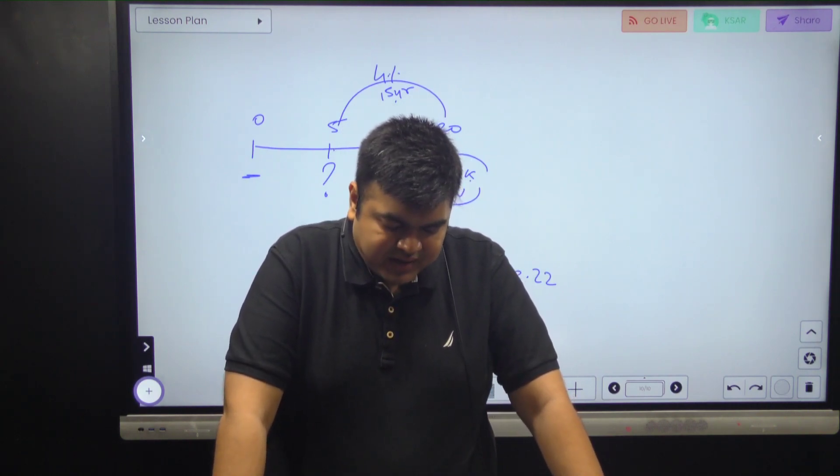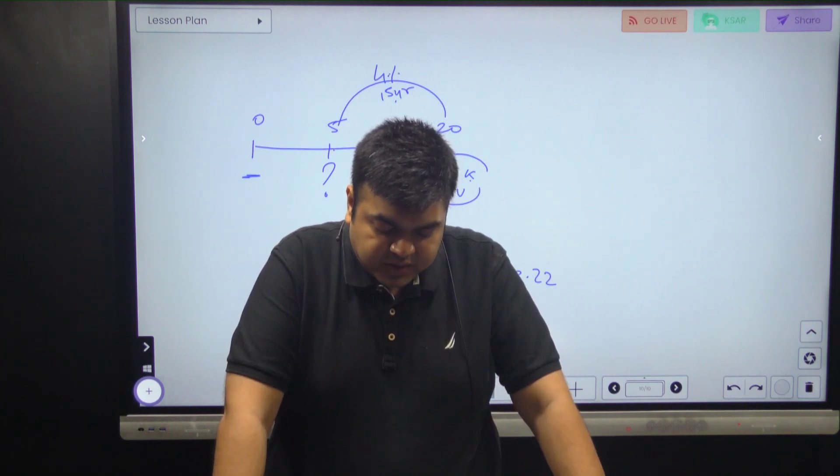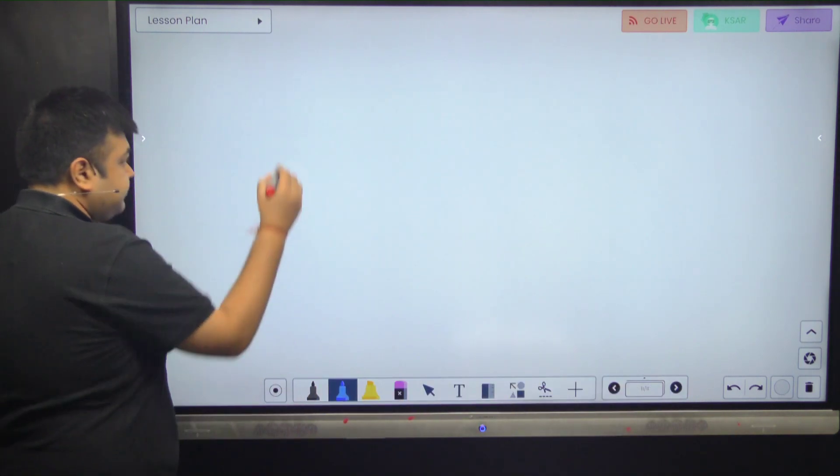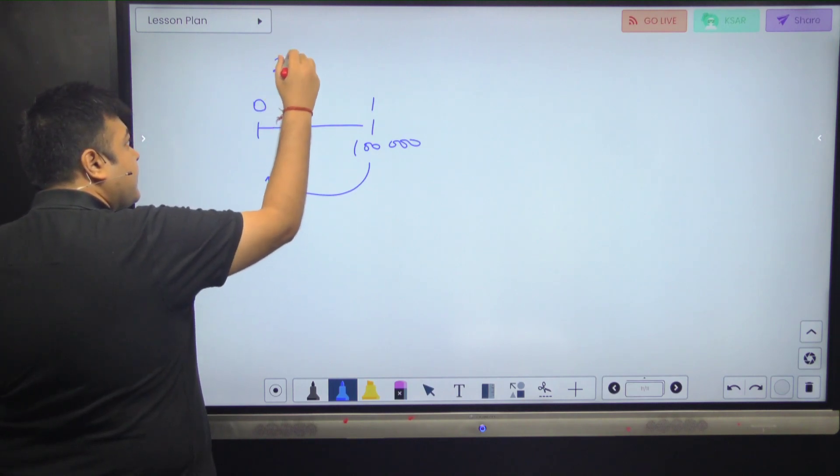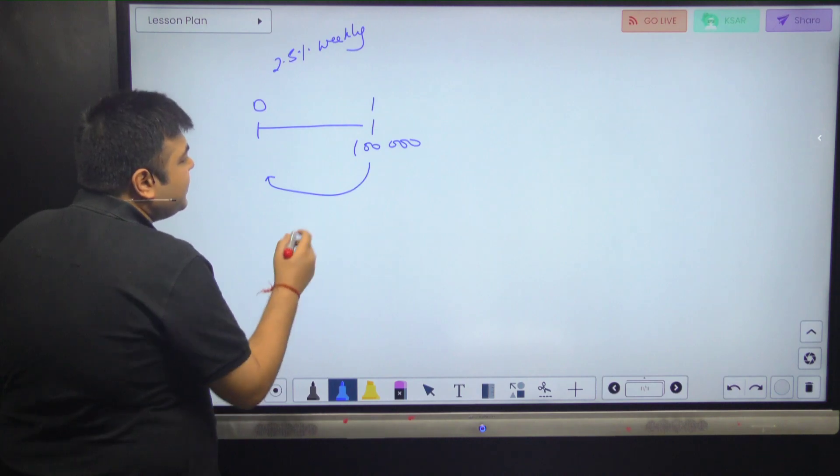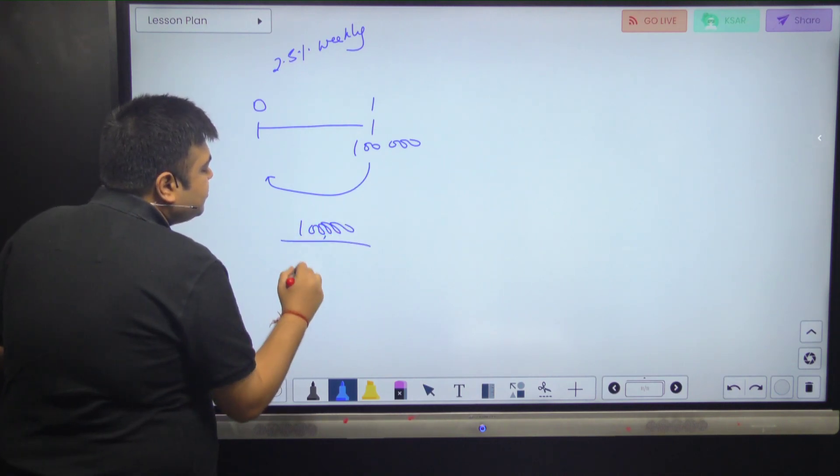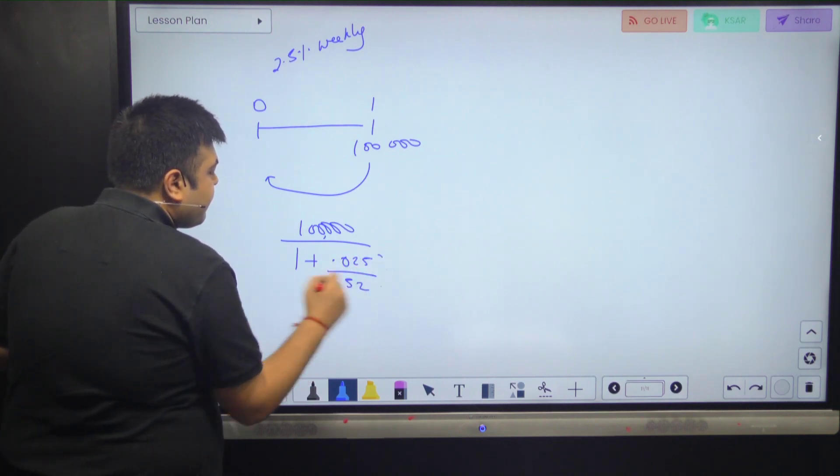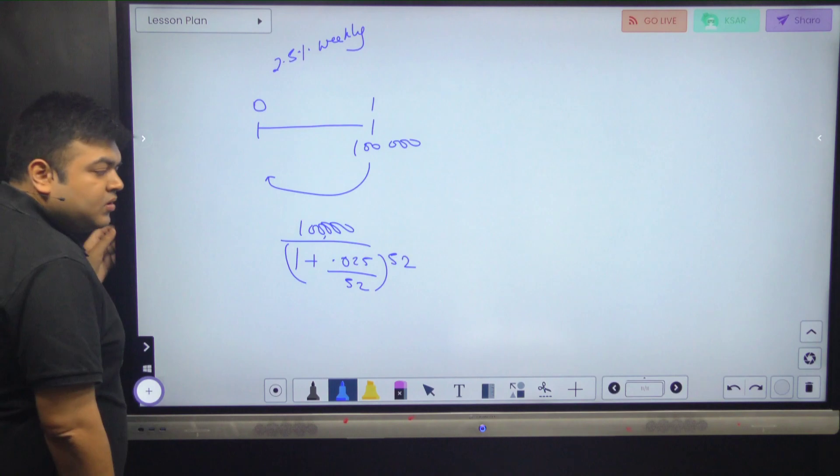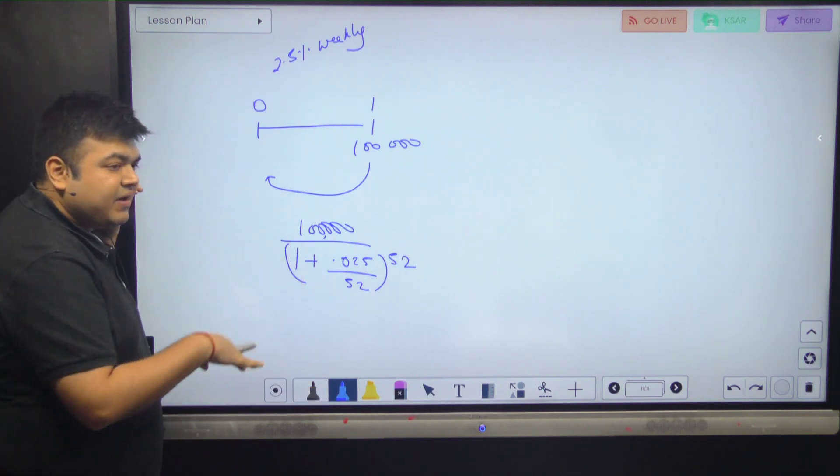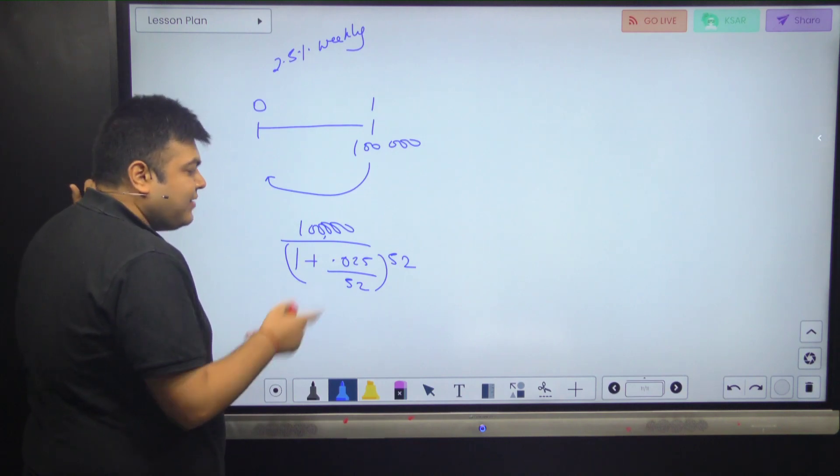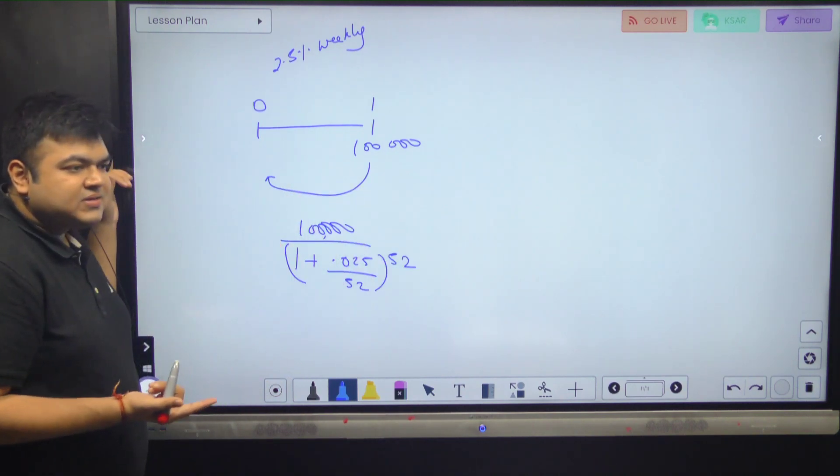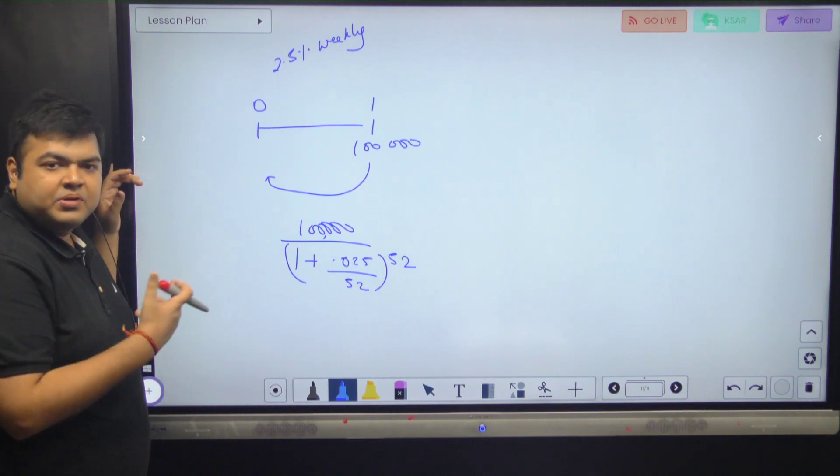Next, a client requires 1 lakh one year from now. If the stated annual rate is 2.5% compounded weekly, the deposit needed today is... This is also very simple. 2.5% is weekly compounding. So 1 lakh becomes how much? That's it. That's the answer.